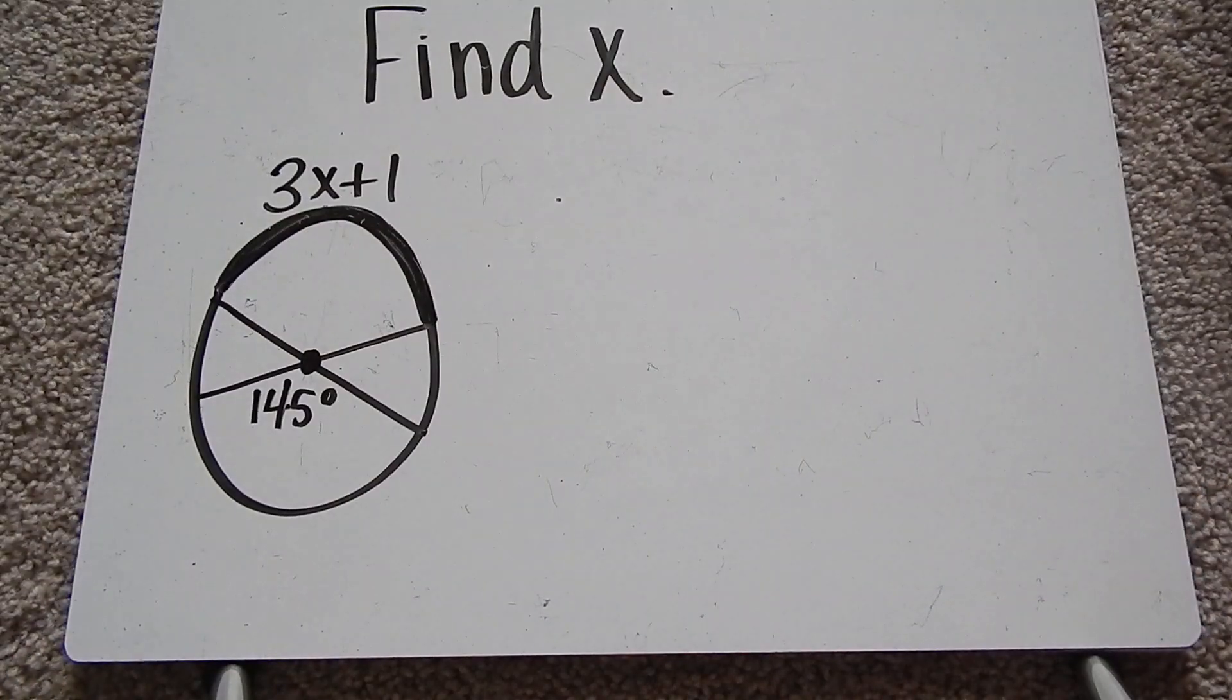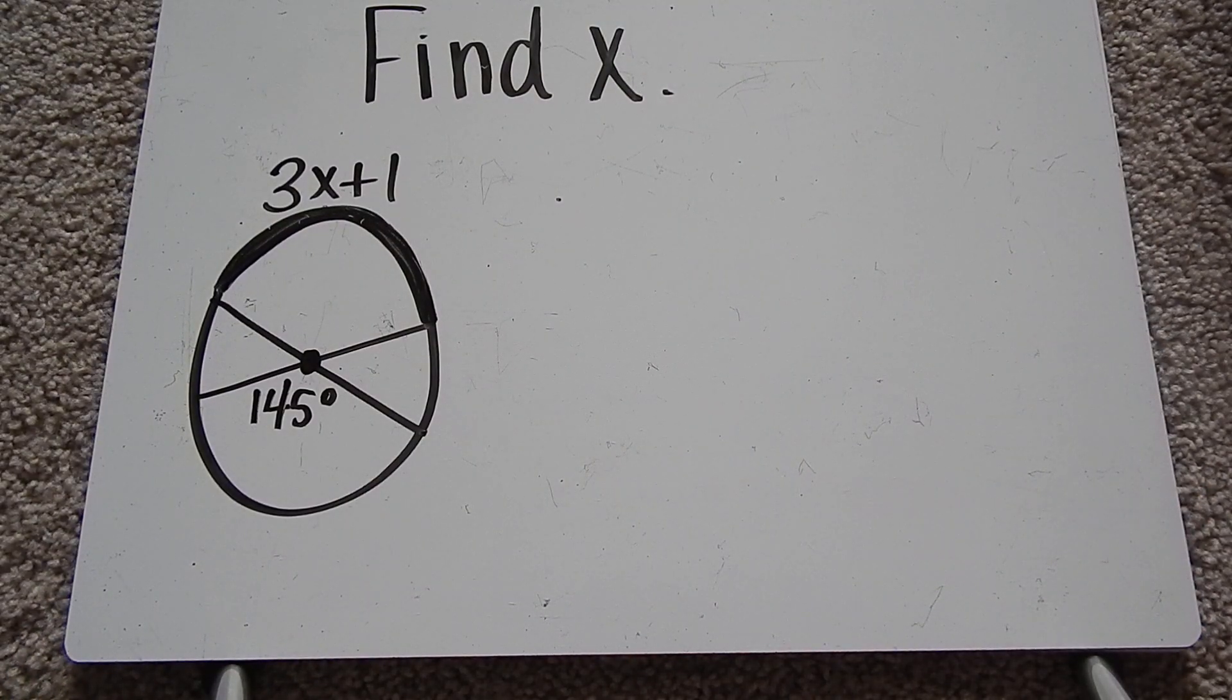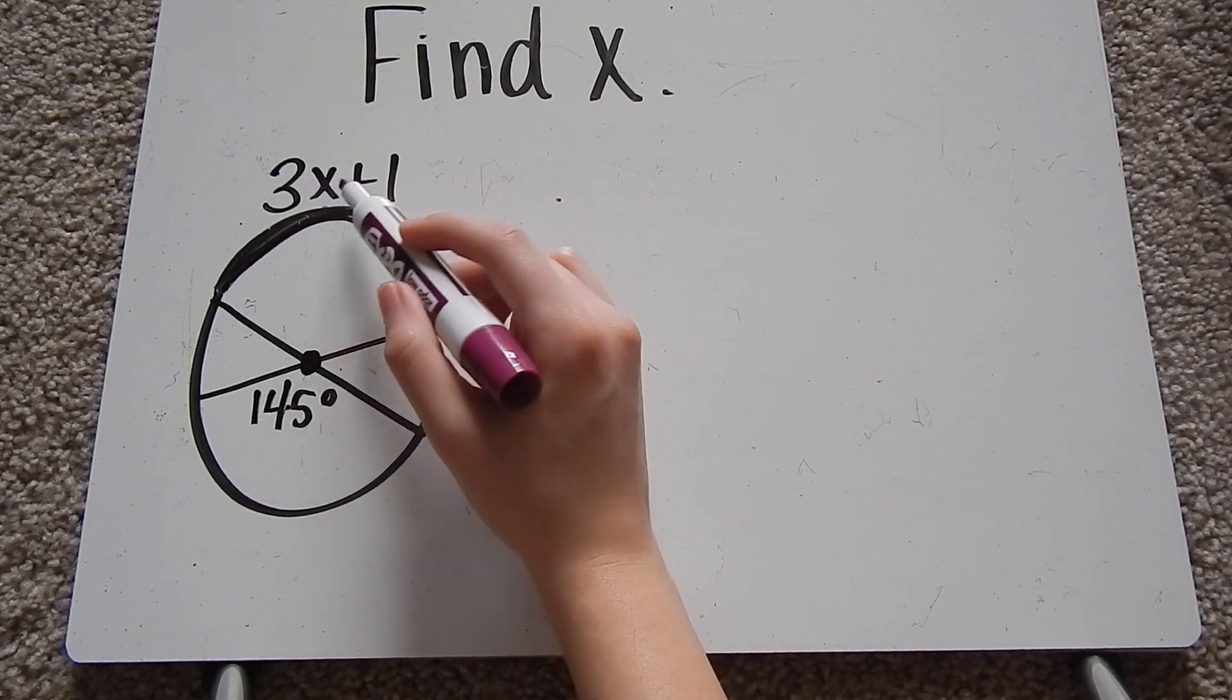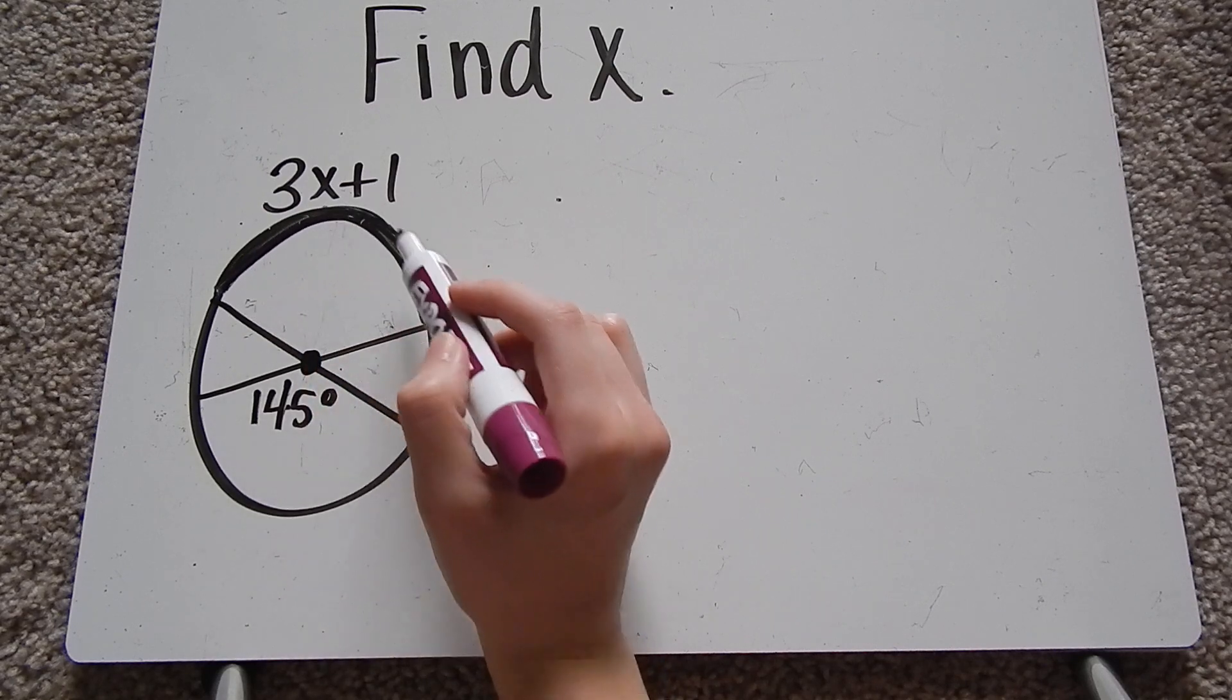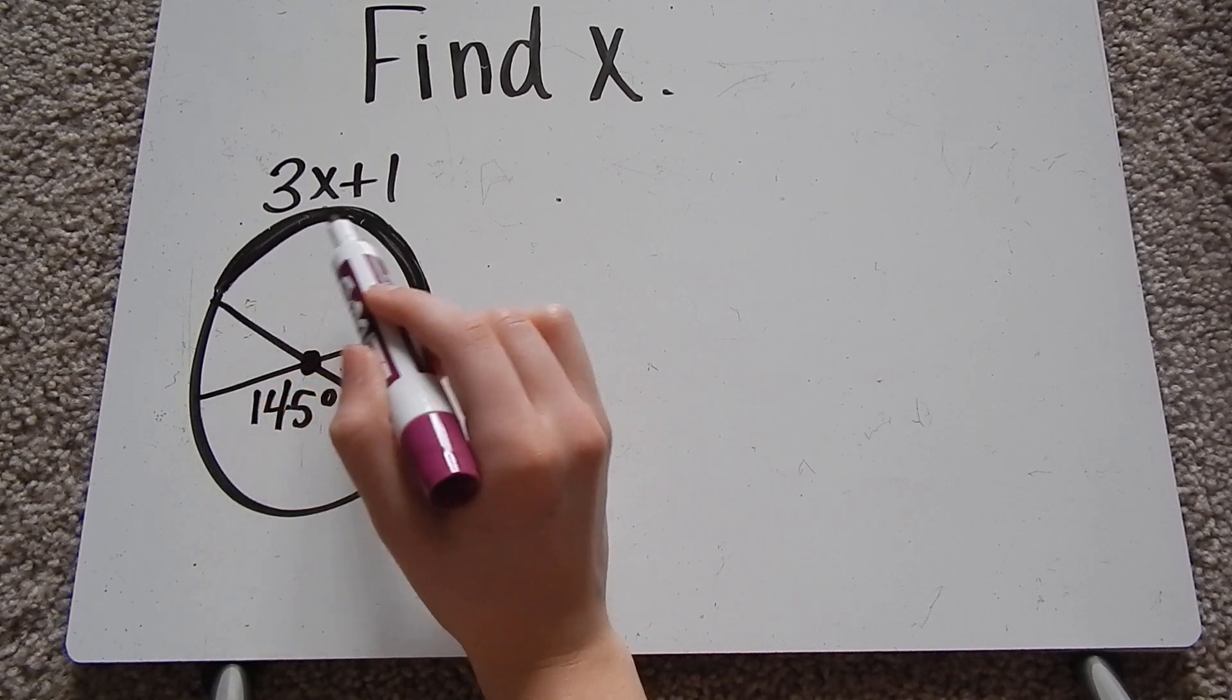So here's our first example. It says find x, okay. So x is right here. 3x plus 1 is the measure of this arc length there.